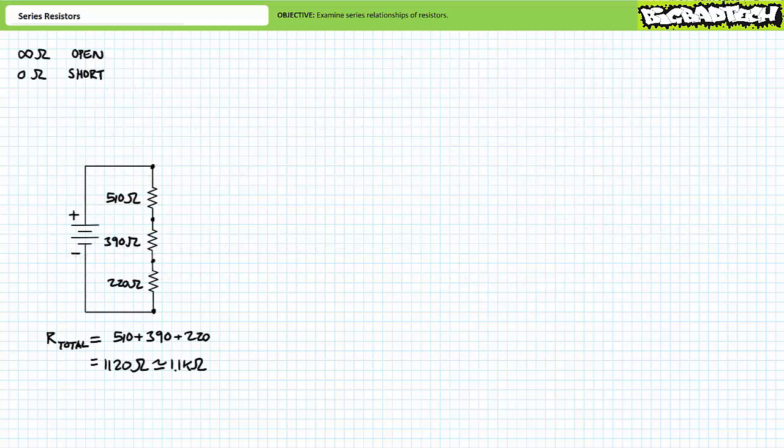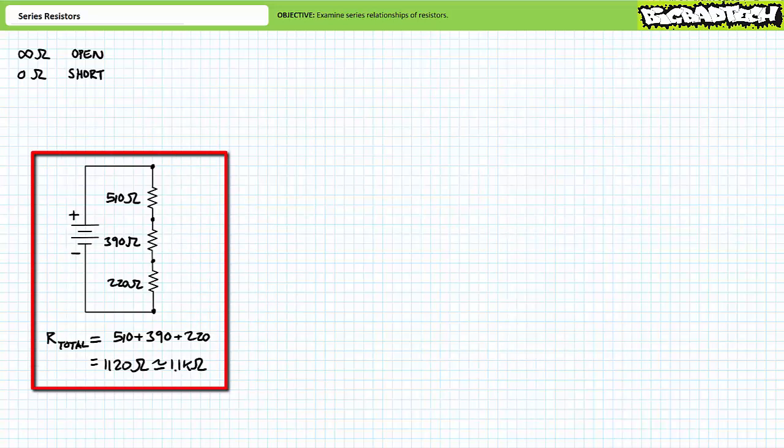Let's now discuss the influence of opens and shorts inside series circuits. Opens are breaks with infinite resistance through which no current can flow. Shorts, in contrast, are zero-ohm paths around other elements. Consider the series combination of a 510, 390, and 220 ohm resistor. Ordinarily, this circuit would have a total resistance of 1120 ohms, roughly 1.1 kilo-ohms.